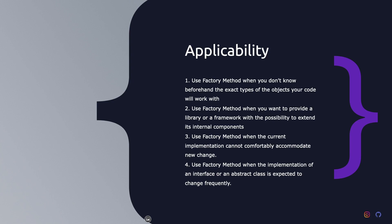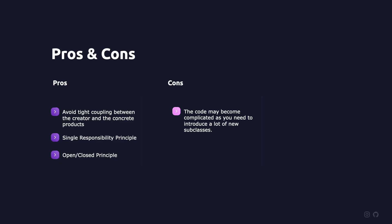Use the factory method design pattern when you don't know beforehand the exact types of the objects your code will work with. Factory method separates the product construction code from the code that uses the product itself. To add a new product type you only need to create a new creator class. Use factory method when you want to provide a library or framework with the possibility to extend its internal components. If you just inherit from the standard components, how can the framework recognize that it should use your class instead of the standard component? The solution is to keep the code that builds the components into a single factory method and let the client override this method in addition to extending the component itself.